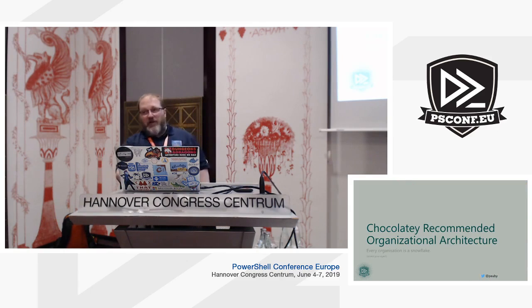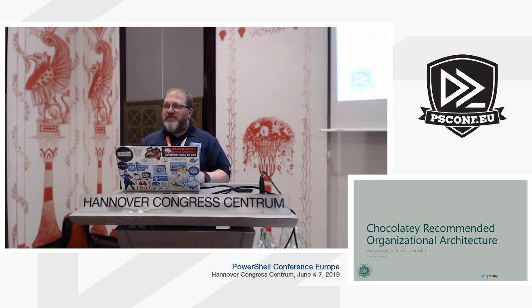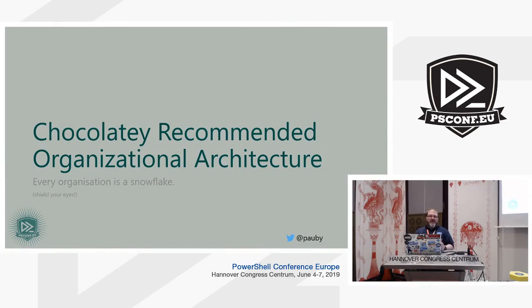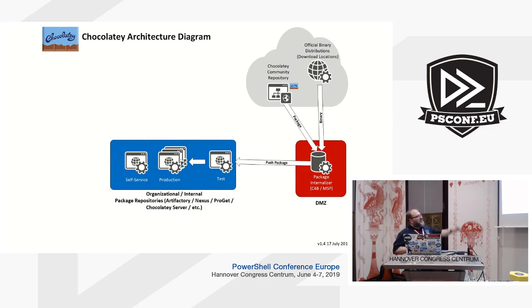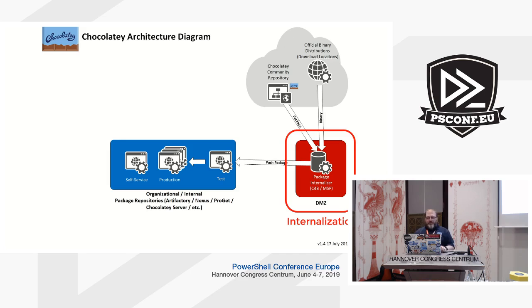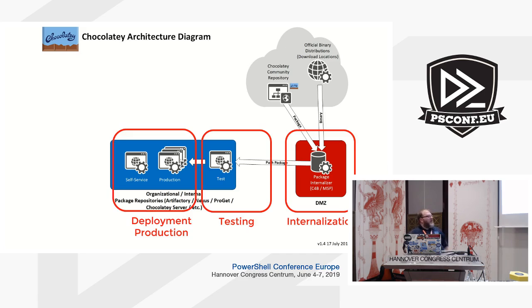Chocolatey's recommended organizational architecture is something we've put together for organizations to use as a template. Every organization is a little snowflake, so you don't have to use all of it — it gives you an idea of what we recommend. You're downloading from the Chocolatey Community Repository and binary download locations, bringing them into the package internalizer, pushing to test, then on to production. That's what we're actually going to do with Jenkins. The three steps are: internalization, testing, and deployment to production.